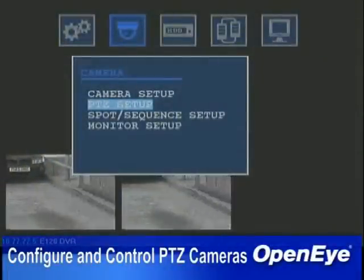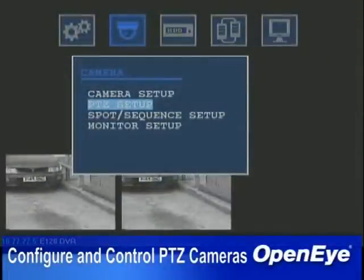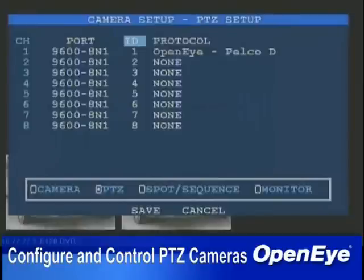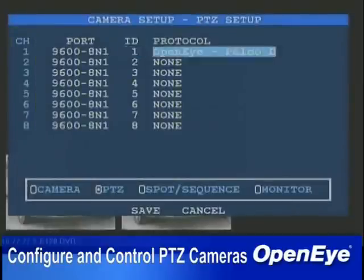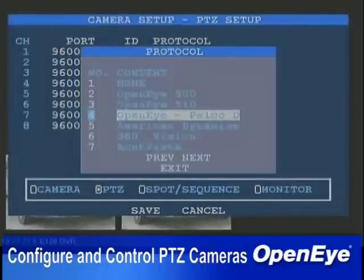Once in Setup, press the right arrow button to select Camera Setup, then scroll down to PTZ Setup and press Enter. Scroll down to the channel number that matches the channel the camera is connected to, then scroll over to Protocol and press Enter. Select the correct protocol from the list.